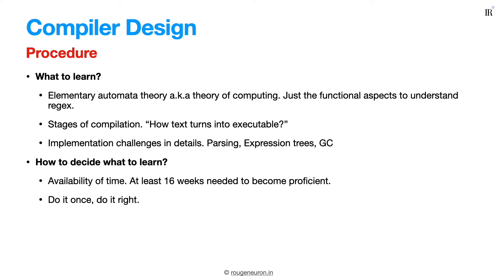The fundamentals I mentioned—the functional automata theory, parsing, expression trees—that particular knowledge takes around 16 weeks to become proficient in. Focus on it when you have time available, ideally within the second or third year of your job because you have a much better handle on your routine. Focus on doing it once, doing it right. If you haven't understood something, spend time on understanding it before moving forward. It's not about getting a course completion certificate from a platform.